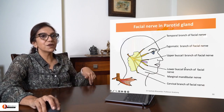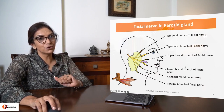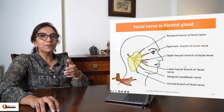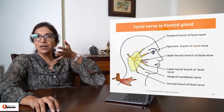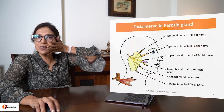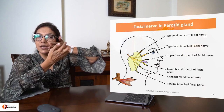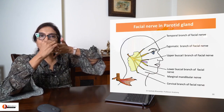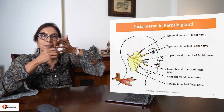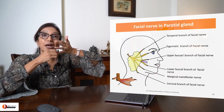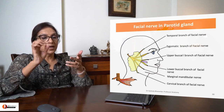These are all the branches of facial nerve — five branches are given off. Use your hands please. Put your hand on the side of your face. What are the five branches? Temporal branch, zygomatic branch, buccal branch, marginal mandibular branch, and the cervical branch of facial. Remember, the buccal will divide into an upper buccal and a lower buccal branch.